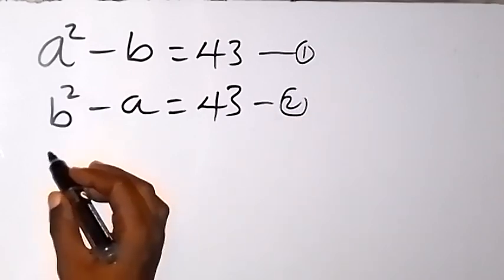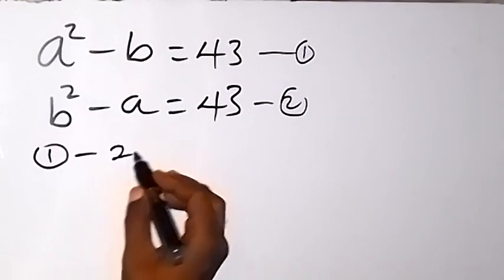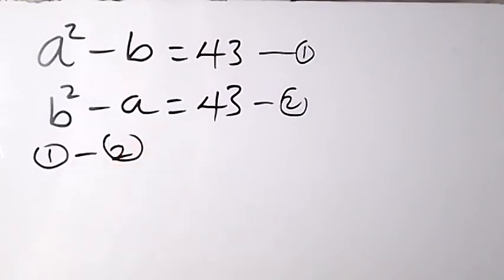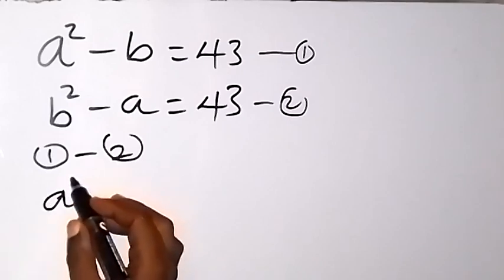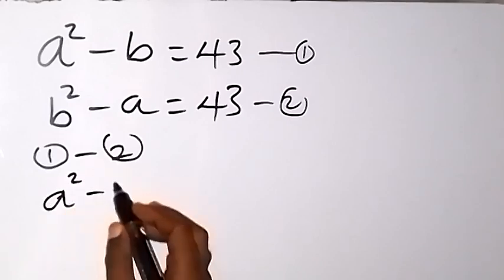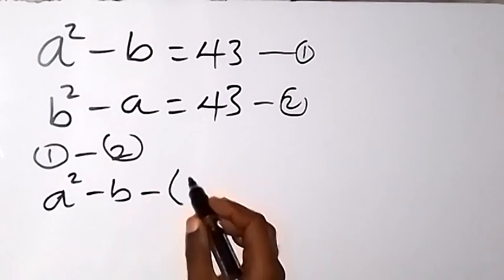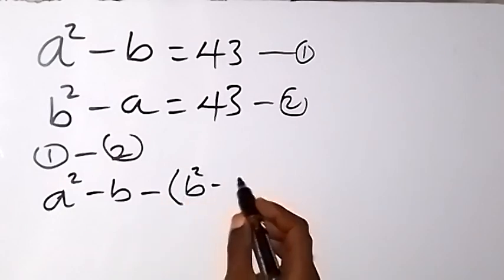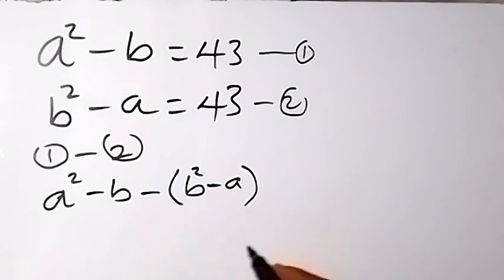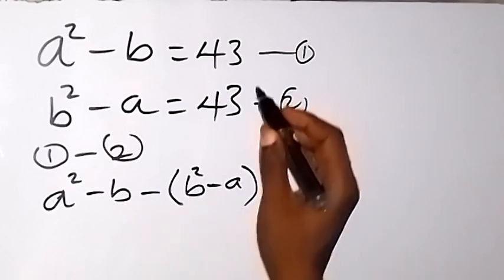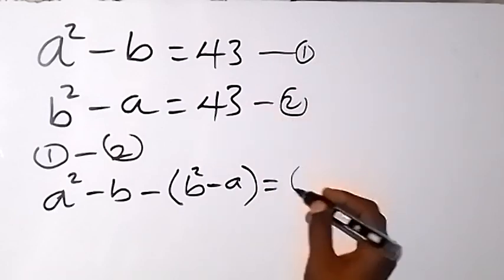Equation 1 minus equation 2. When we subtract the left-hand side, we have equation 1: a squared minus b, then minus equation 2: b squared minus a, in brackets. This equals the right-hand side of 3 minus 4, which is 0.